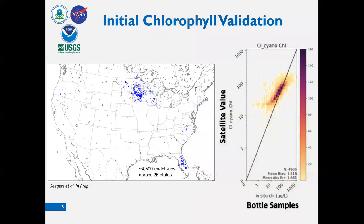Validation is an important step. Both the Cyan chlorophyll and cyanobacteria results were compared with grab samples taken in the field. Many of the samples in the USGS field database were collected in Minnesota and Florida. Approximately 4,500 bottle samples were compared with matched time series data from 2002 to 2012 across 26 states. The algorithm performed well, especially in the range of 10 to 100 micrograms per liter. This work is in preparation for publication.